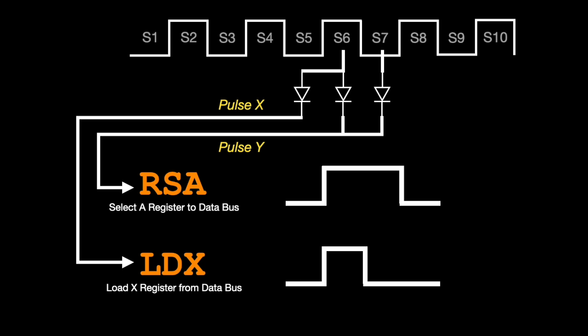So now the output of sequencer step 6 first enters our diode pulse generator, which in turn activates both the Pulse X and Pulse Y control lines, which will then drive the RSA and LDX lines as expected. And in the next step, only Pulse Y is engaged, and this holds the RSA line active and allows the extra time needed to ensure that the X register has the correct value from the data bus.